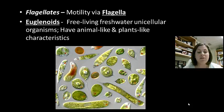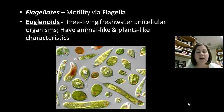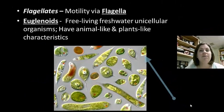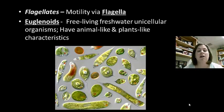Some euglenoids are heterotrophs — they have flagella but no cell wall. Others are autotrophs, meaning they do photosynthesis and contain chloroplasts, which makes them green. They can store starch like plants and have an eye spot, which you can see here in red in these examples. This group again shows the confusion of classification within Protista, but the euglenoids are our first group.